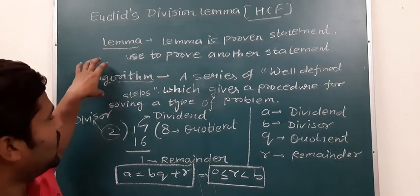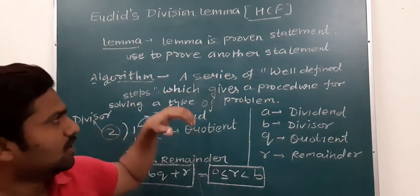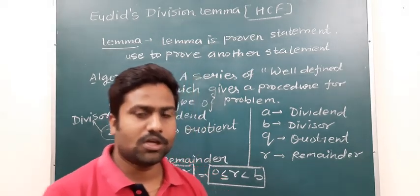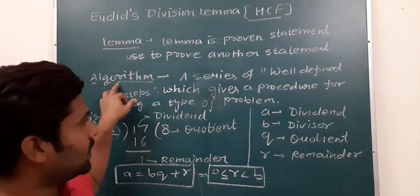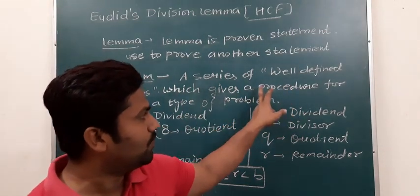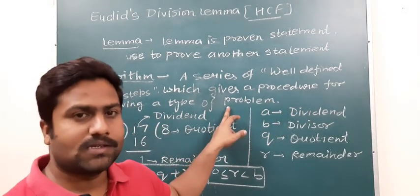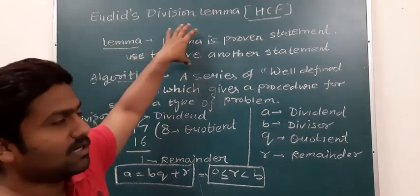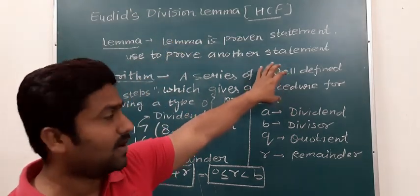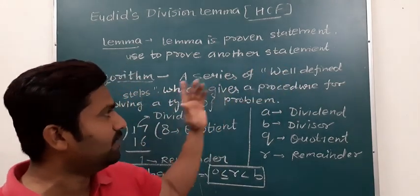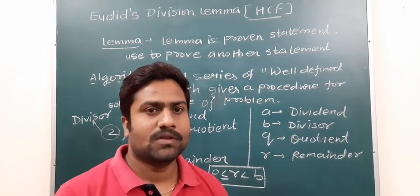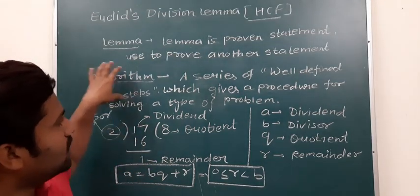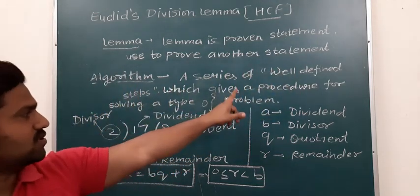There is also an algorithm. Algorithm means a series of well-defined steps which gives a procedure for solving a type of problem. So Euclid's Division Algorithm is a series of well-defined steps used to solve problems like finding the HCF.